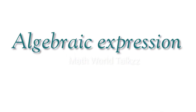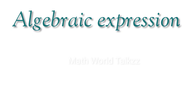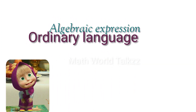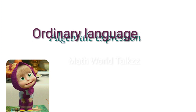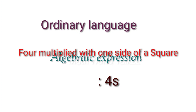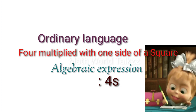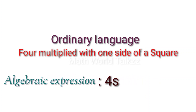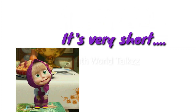Let's try to write some algebraic expressions from ordinary language. Ordinary language means the relation expressed in words. When we write the short form of that relation, we get the algebraic expression. Here the ordinary language is: '4 multiplied with one side of square.' We can take the side of the square as s, so the algebraic expression is 4 into s, that is 4s.